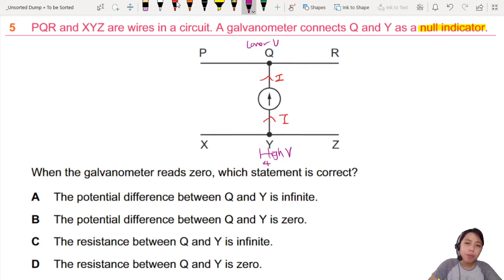For example, maybe you have four volts here and two volts there. Therefore, current will flow through the galvanometer and go over to the other side. That is if you have a reading.